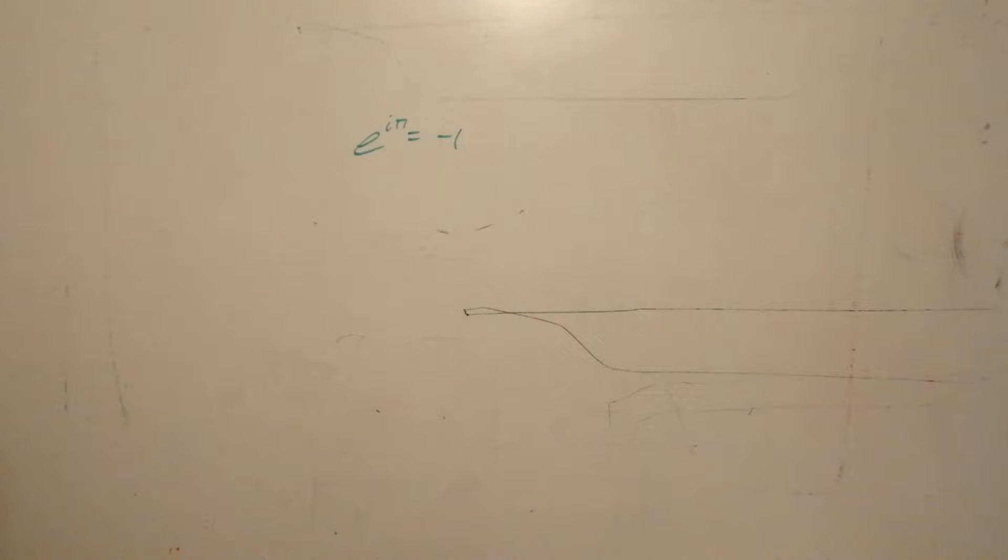Now proving i to the i is slightly more difficult. What we need to do is we need to get a second i in here, and we're going to do that by taking the square root of minus one, because the square root of minus one is equal to i. So we now have i equals e. Now the square root is equal to the one-half power, and you multiply exponents, so that's the same as e to the i pi halves power.